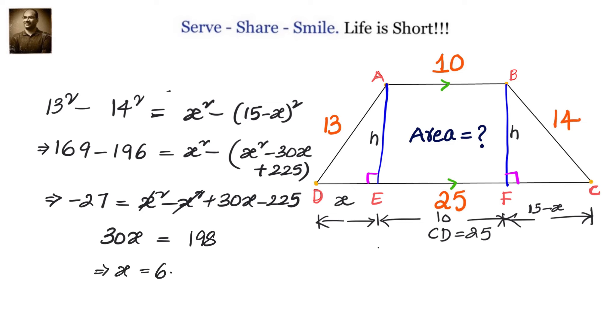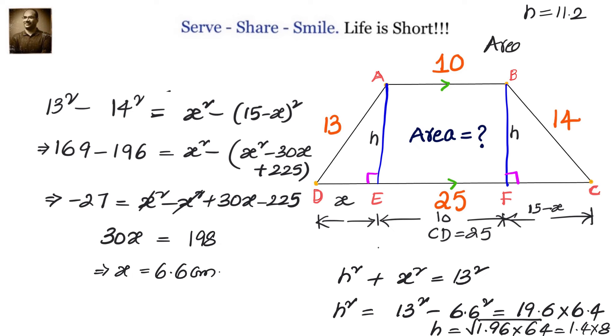But what we need is h. We are not interested in x, but we need x to calculate the value of h. Now let's go to triangle ADE and say that h² + x² = 13². Substitute x = 6.6: h² = 13² - 6.6² = (13 + 6.6)(13 - 6.6) = 19.6 × 6.4 = 1.96 × 64, so h = 1.4 × 8 = 11.2.